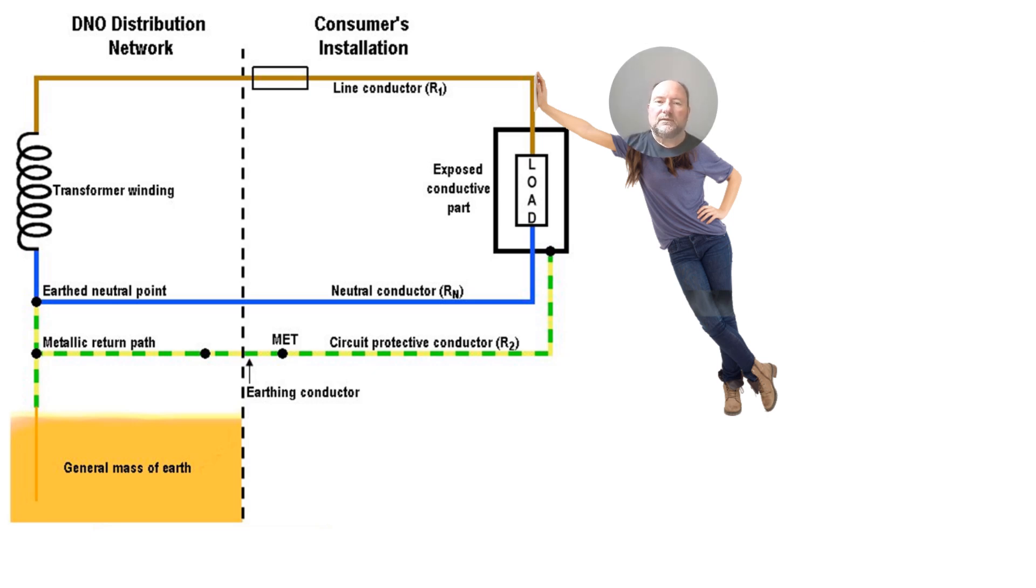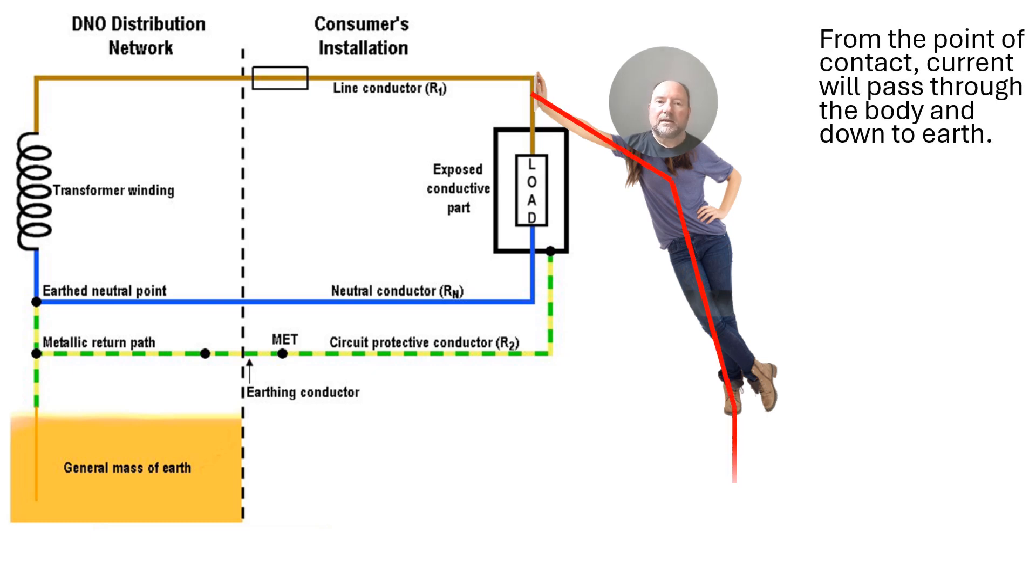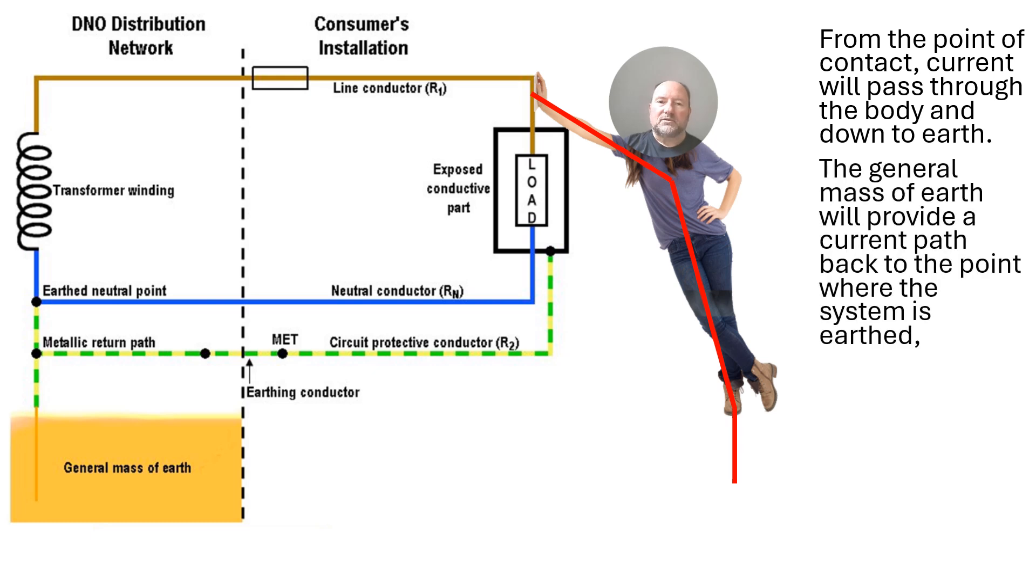So the current actually flows from the point of contact and then it flows down through the body and then out to Earth.